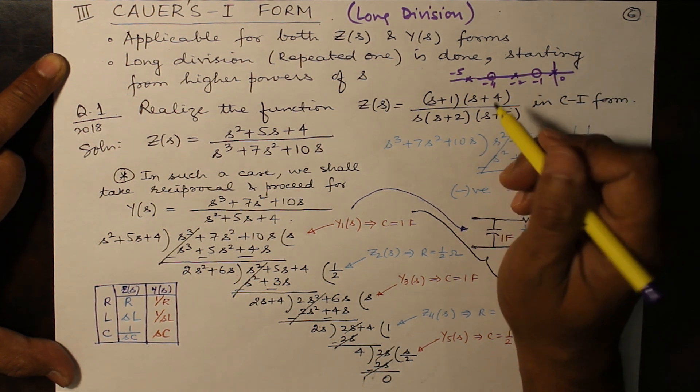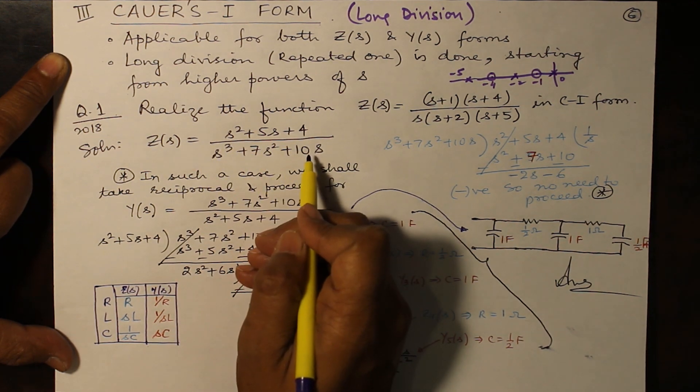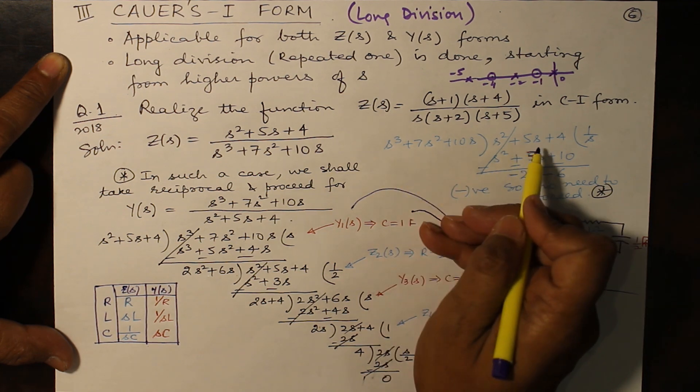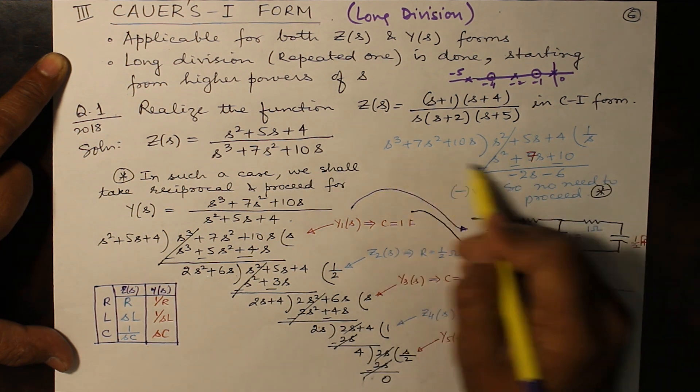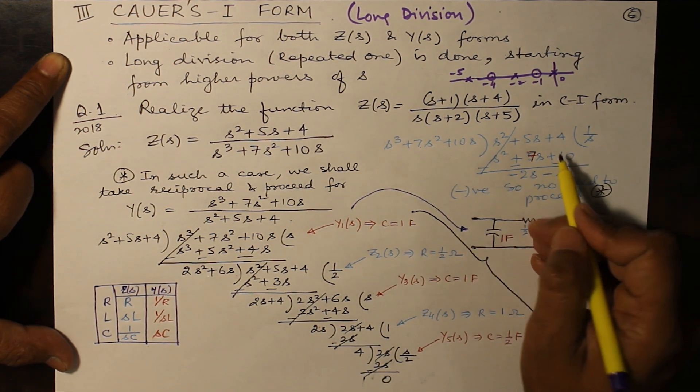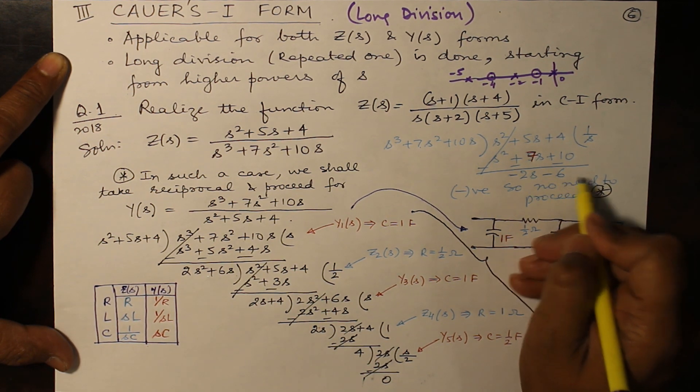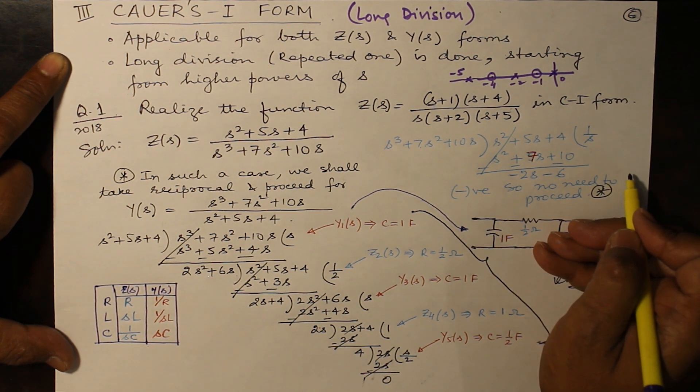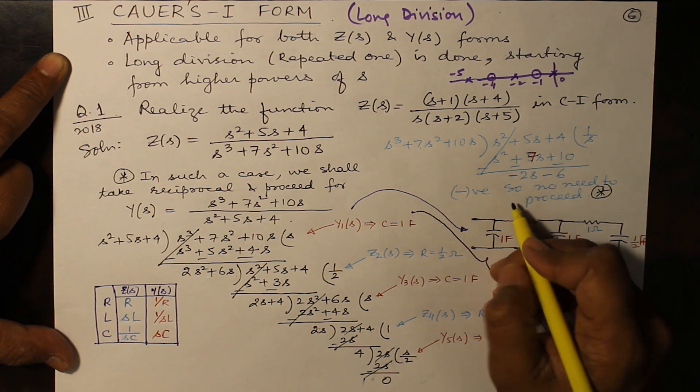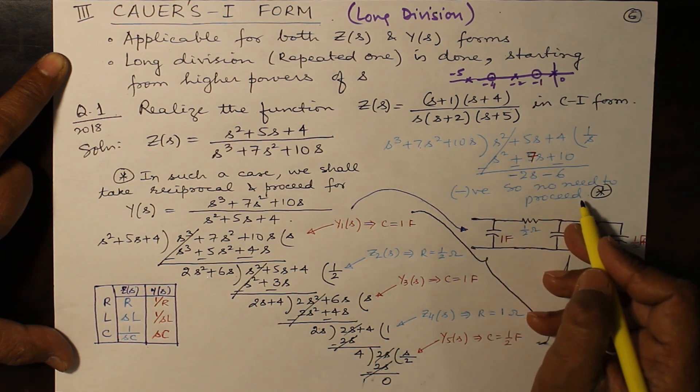In Cauer's I form, first you expand it and then divide it by higher power of s. You will see 1 over s when you put it here gives you s² + 7s + 10. On subtraction you get a negative sign here, -2s - 6. If you divide it further, the next value which you will obtain will be negative and negative values cannot be realized by RLC network. Therefore we don't have to proceed any further from here.